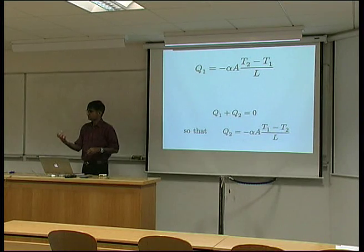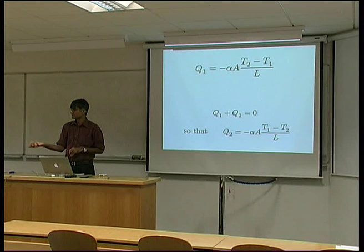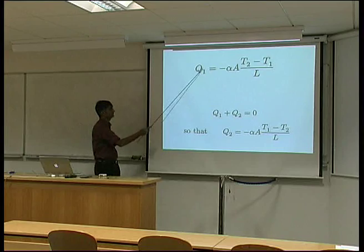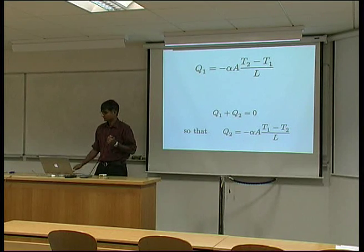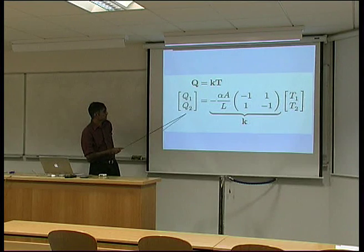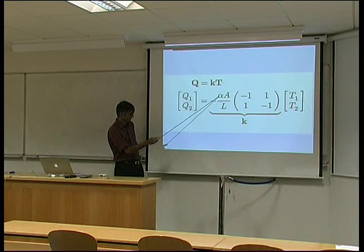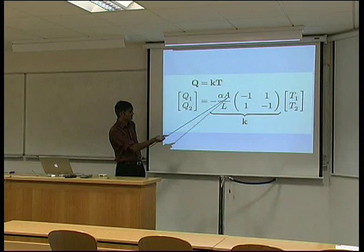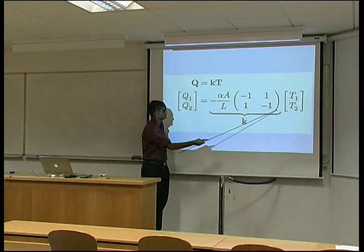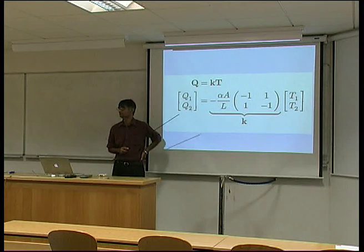Now, you can see the analogy here, which we had with displacement and force. I could take both of these and represent them using a matrix equation, where I have Q1 and Q2 here, the thermal diffusivity, the cross-sectional area, and the length of the bar.